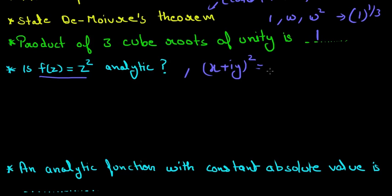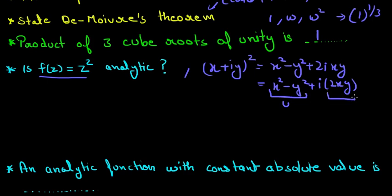So we will just apply the (a+b)² formula, x² iota² is -1 minus y² plus 2iab. So now just rearranging it, x² - y² plus iota times 2xy. So now just applying the Cauchy-Riemann equation, this is u and this is v.